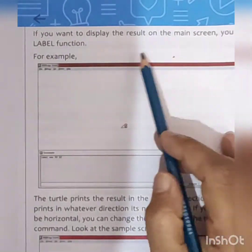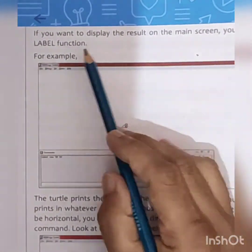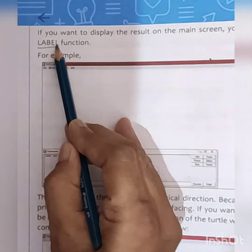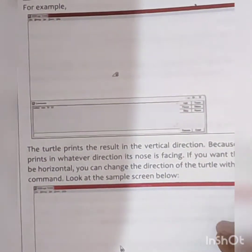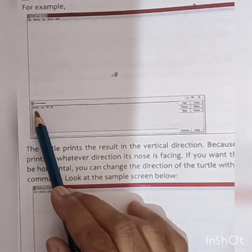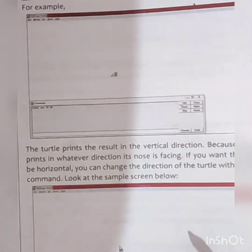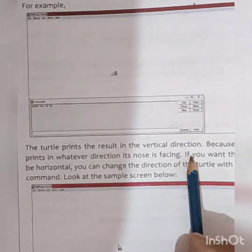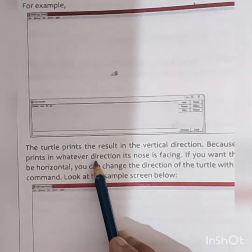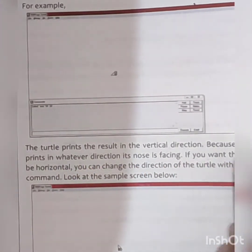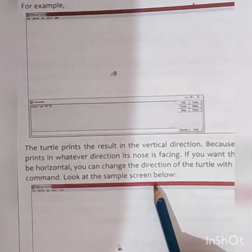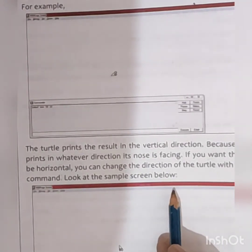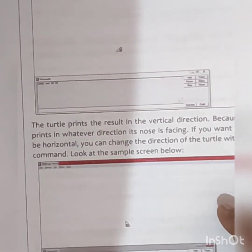In the sum function, if you want to display the result on the main screen, you can use the label function. You write: label sum then the value, and it will display on the screen. The turtle prints the result in the direction its nose is facing — there are two directions, horizontal and vertical. If you want the result in the horizontal direction, you can change the direction by putting RT 90 — that is right turn 90 — to change the direction of the turtle.